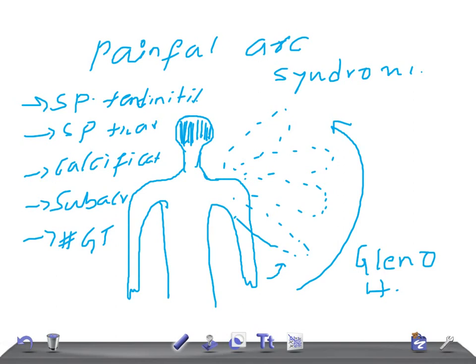If you take an X-ray, you can see calcific deposits or a fracture of the greater tuberosity or acromion process. Treatment consists of ultrasonics to the tender points and anti-inflammatory drugs like NSAIDs. Some cases need an injection of hydrocortisone steroids, given in the subacromial space. This has been a brief discussion about painful arc syndrome.